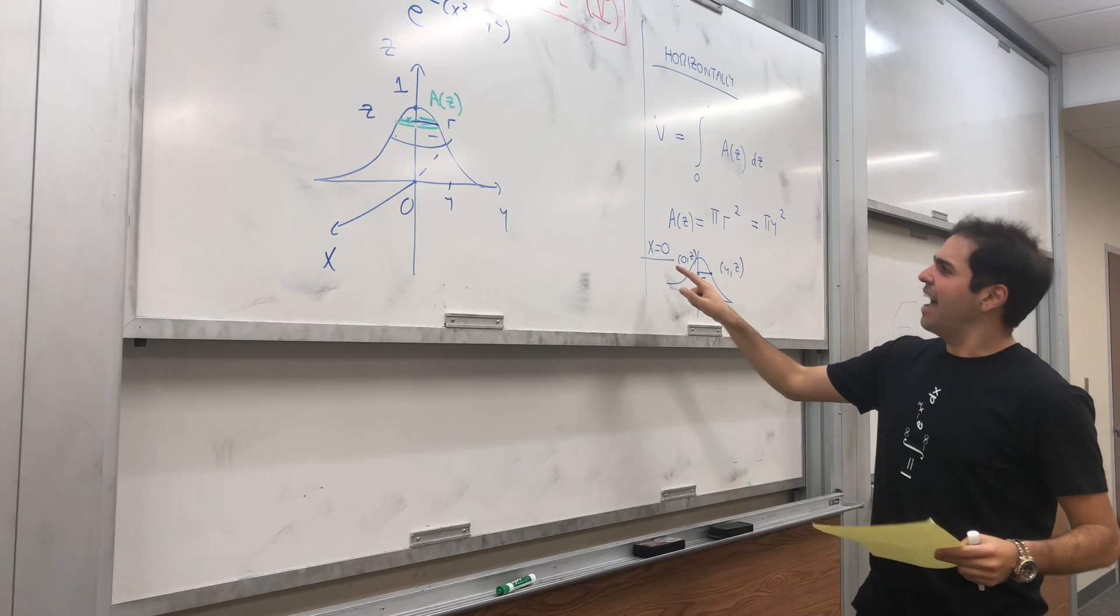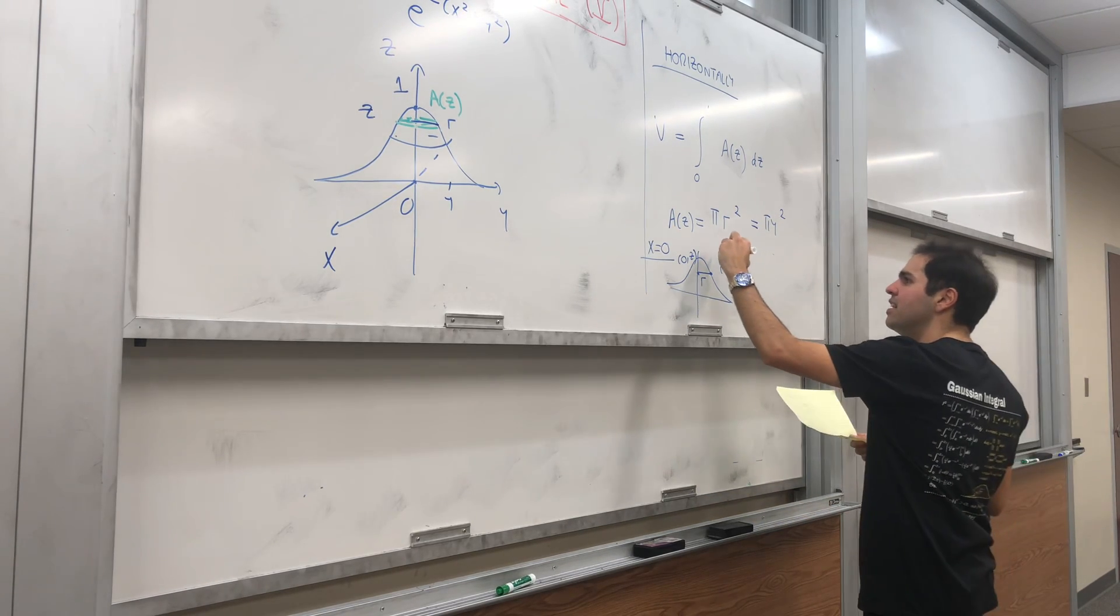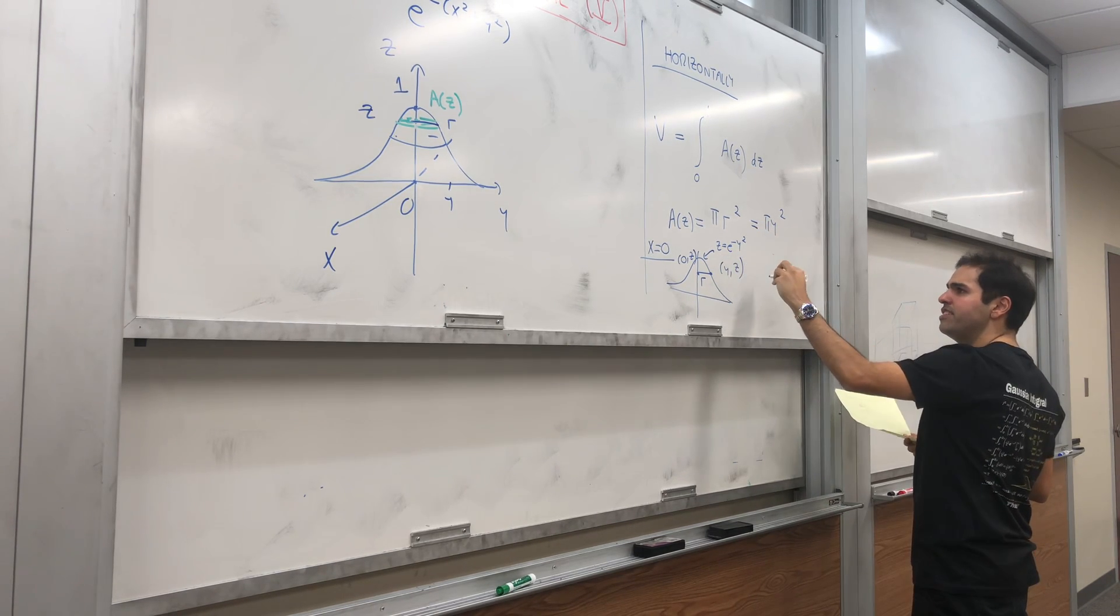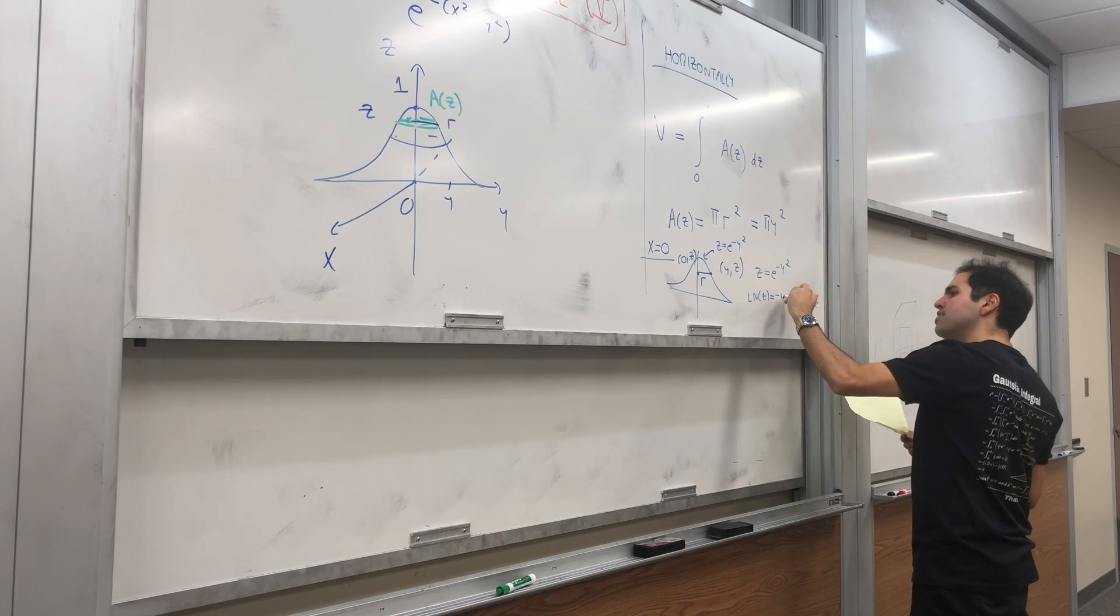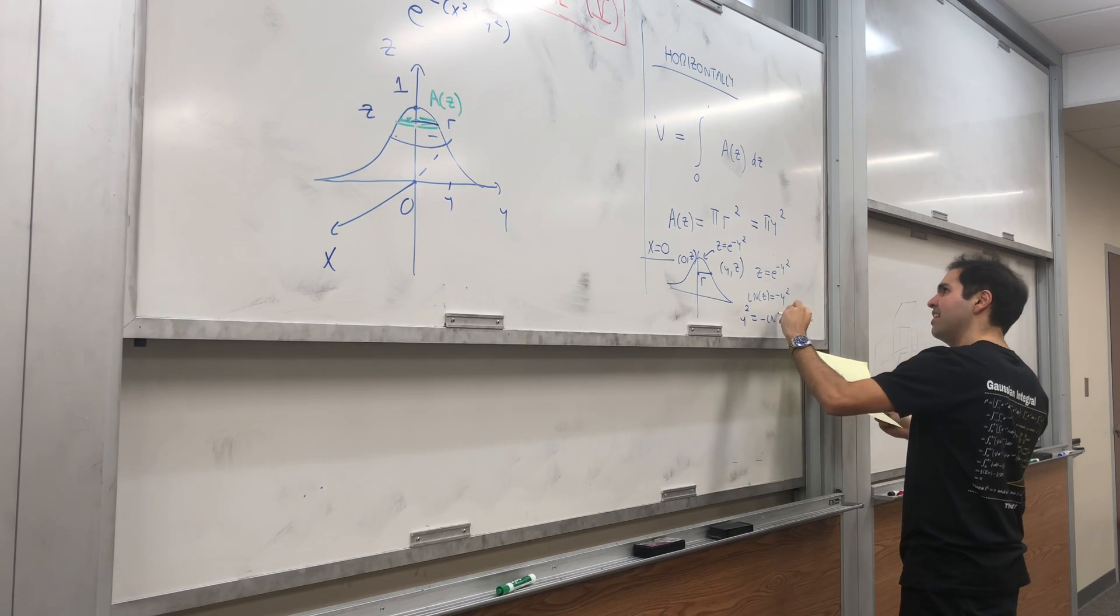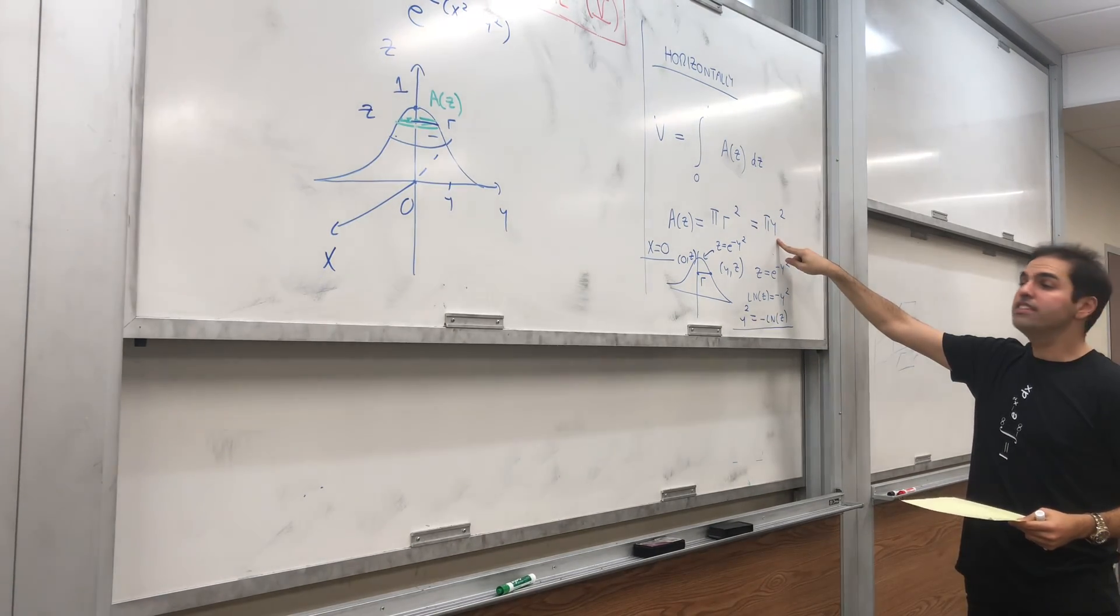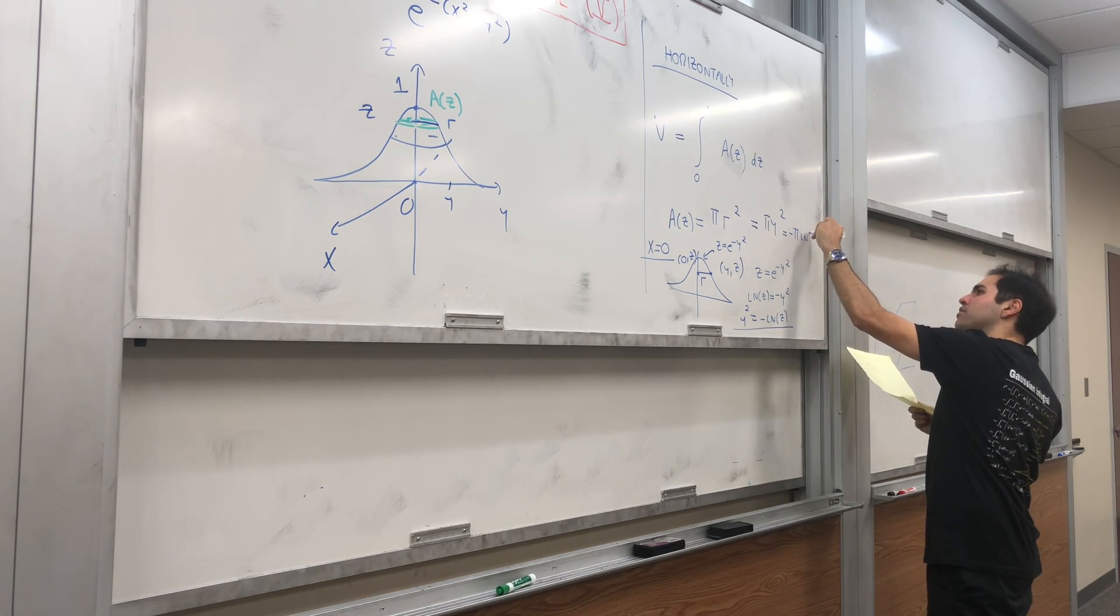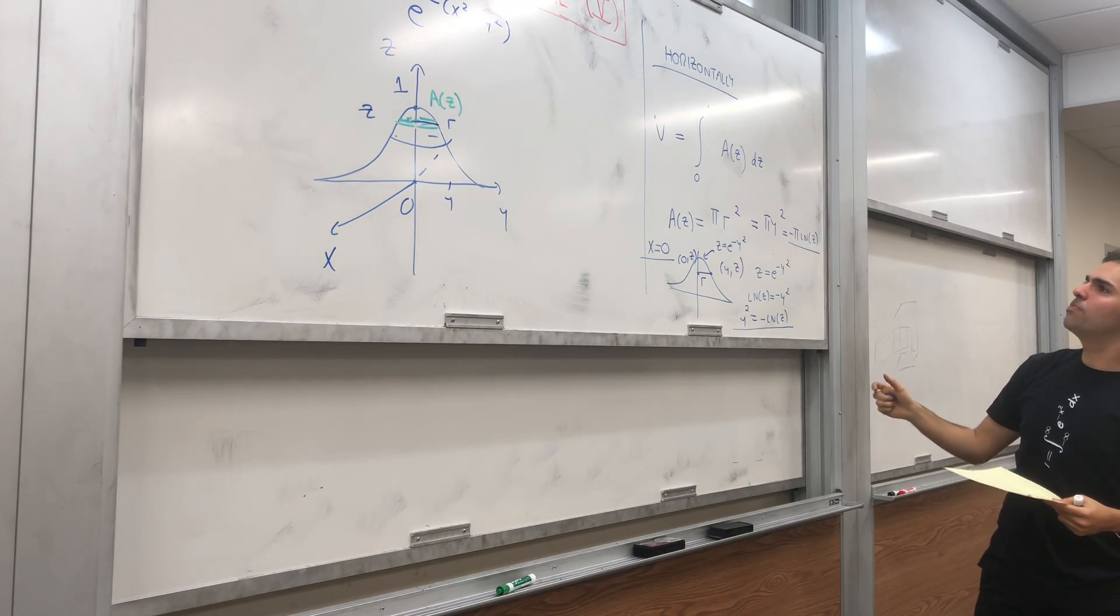At x equals 0, our graph is actually much easier—it just becomes z = e^(-y²). If z = e^(-y²), then ln(z) = -y². So y² = -ln(z), which is what we wanted. We wanted to write y in terms of z. So A(z) = -π ln(z).